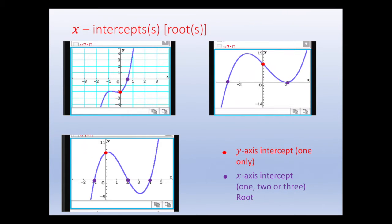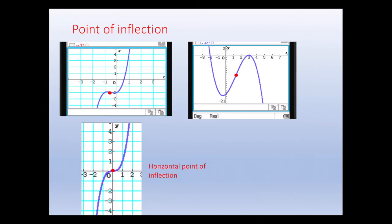Looking at intercepts: for all cubic functions, there is only one y-axis intercept. For the x-axis intercepts — also called roots — you could have one, two, or three roots. We will learn how to identify the roots and sketch the graph.